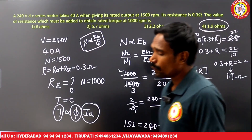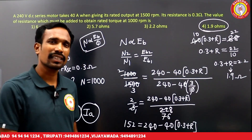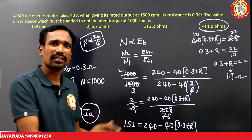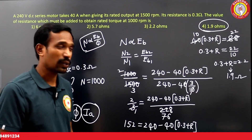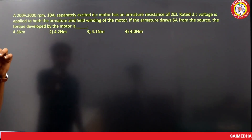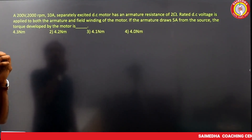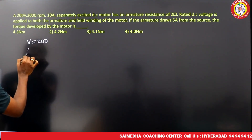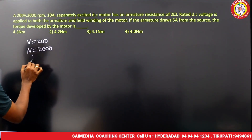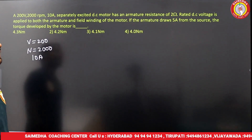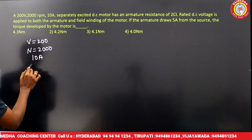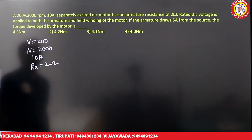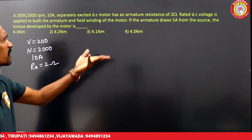It is a lengthy question but straightforward if you practice. Speed and accuracy in calculation come only through practice. Next question: a separately excited DC motor rated at 200 volts, 2000 rpm, with armature resistance of 2 ohms.